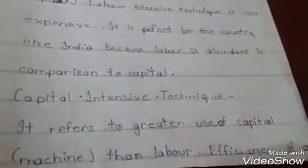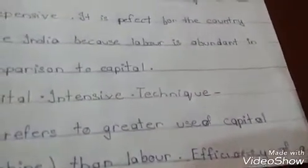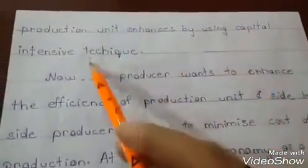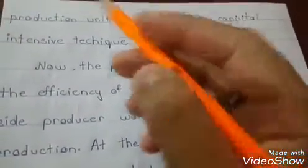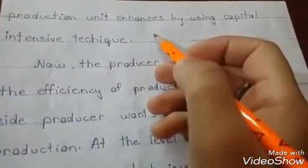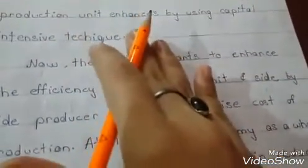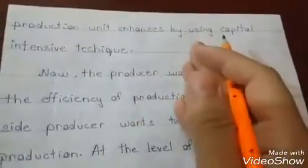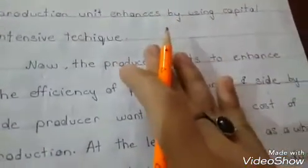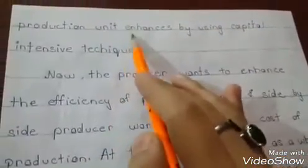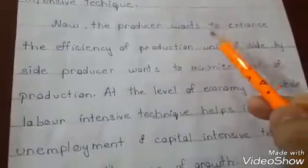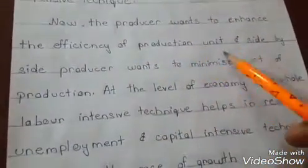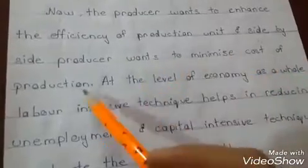Capital means machines are used more compared to labor. The efficiency of a production unit enhances by using capital intensive technique. Efficiency generally rises with capital intensive technique because machines are more efficient compared to labor. If a laborer gets sick or has an accident, he will not remain efficient, so machines are more efficient. Therefore, capital intensive technique increases the efficiency of the production unit.